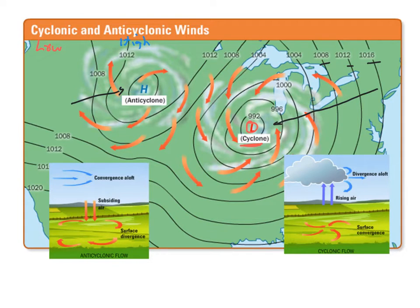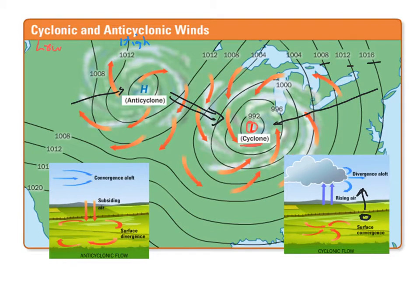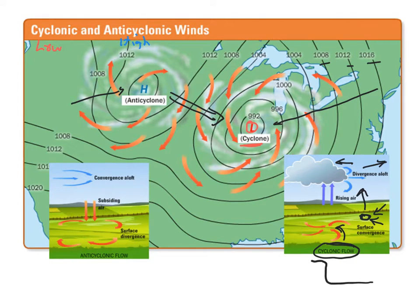Winds traditionally blow from a high pressure system to a low pressure system. In a cyclone — a low pressure system — we see rising air because it's a little bit warmer. That rising air creates a gap below, which is filled by surrounding air blowing in. This is the cyclonic flow, where air blows in toward the middle of a low pressure, rises upward, and then diverges above. So air flows in along the ground, goes up, and spreads out.